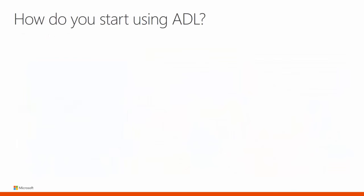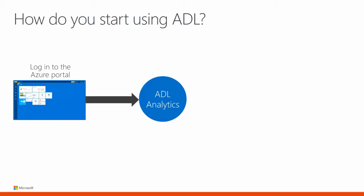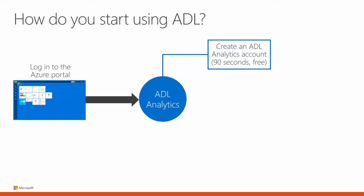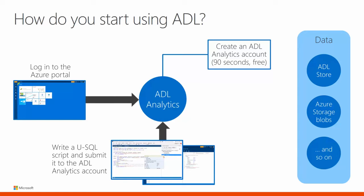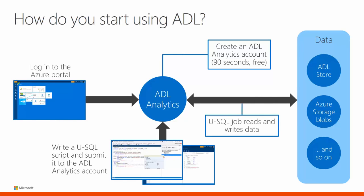A Data Lake Analytics project begins by logging into the Azure portal and creating a Data Lake Analytics account, which can be created quickly and is free. Next, prepare the source data — a Data Lake Analytics job can read data from either Azure Data Lake Store accounts or Azure Blob Storage accounts. Next, develop and write a USQL script and submit a job to the Data Lake Analytics account. The job reads from the source data, processes it as instructed in the USQL script, and then saves the output to either a Data Lake Store account or a Blob Storage account.